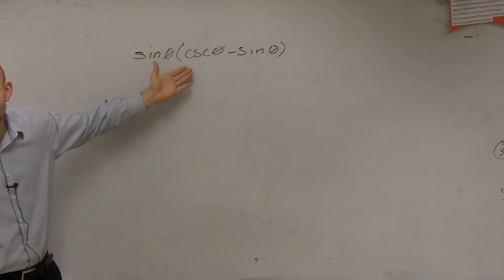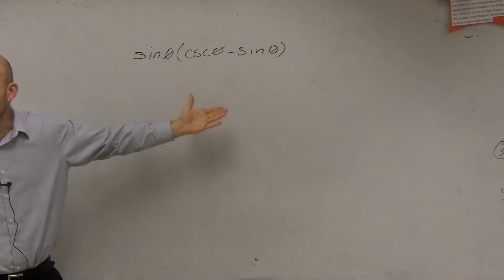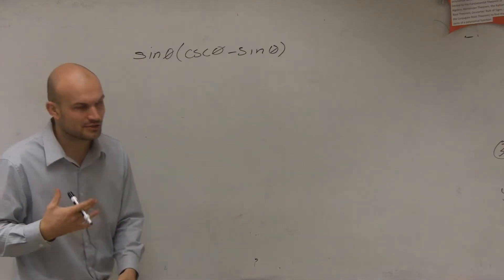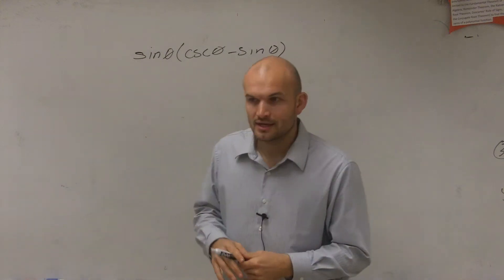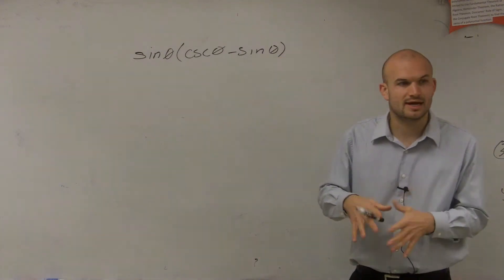However, we do have parentheses, and we have our function outside of it telling us that we're going to need to multiply. So whenever you're looking at these and you're trying to simplify your identities, if it says multiply, just go ahead and multiply.